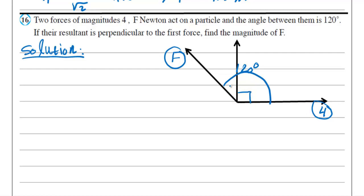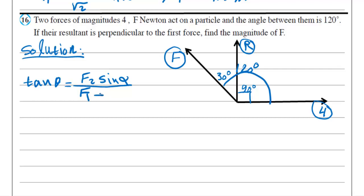So what is the measure of the angle between R and F? It will be 30, because 30 plus 90 equals 120. Now we will use the same rule: tan θ equals F2 sine α over F1 plus F2 cosine α. Here the 90 degrees is between the resultant and F1, so in this case we consider F1 equals 4.